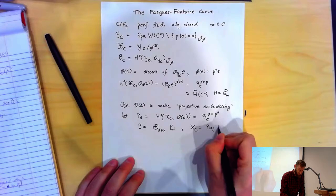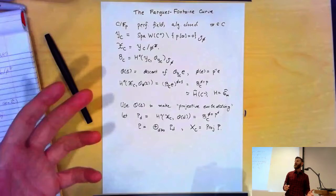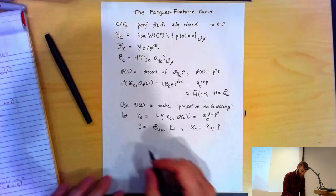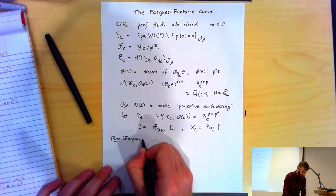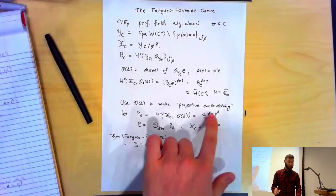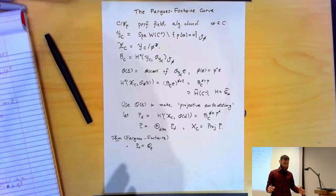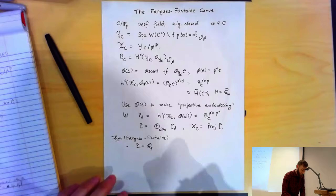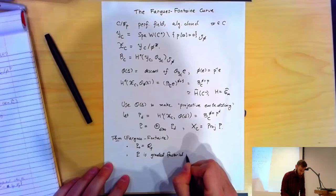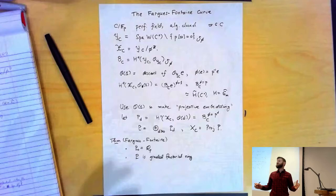This is a natural thing to do whenever you have an analytic space and a line bundle — you can declare it ample and attempt this construction, though the relation between the analytic space and the result isn't always clear. But in this case, something really remarkable happens. This is the theorem of Fargues-Fontaine: P_0, the part where φ acts as 1 on B_C, is just Q_p — so Q_p is like the base field. Moreover, P is a graded factorial ring, meaning elements of any P_d factor uniquely into elements of P_1.